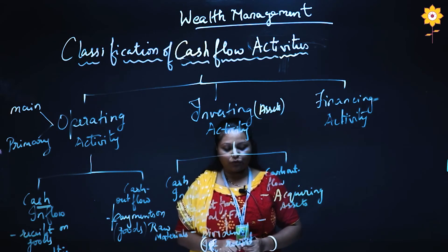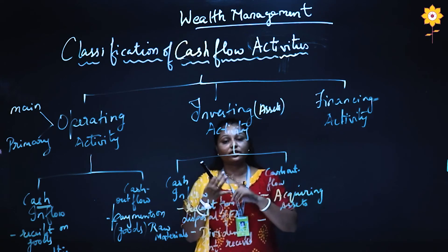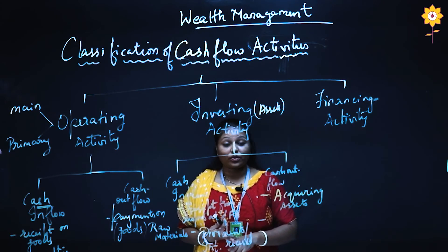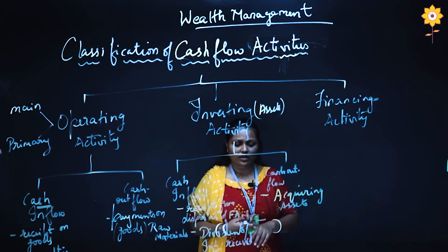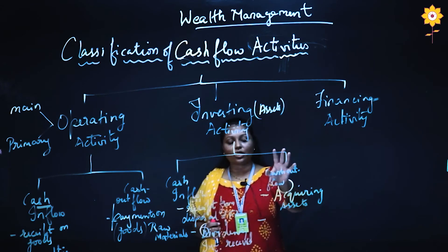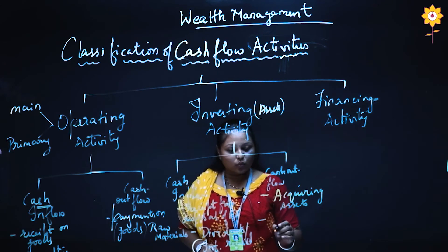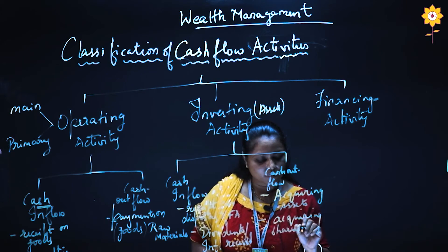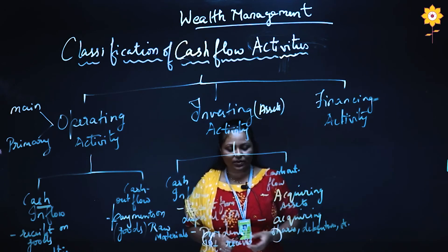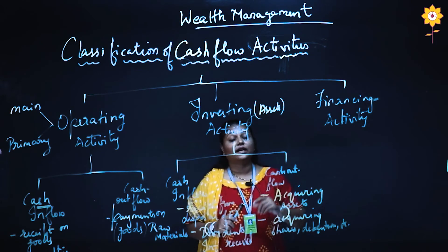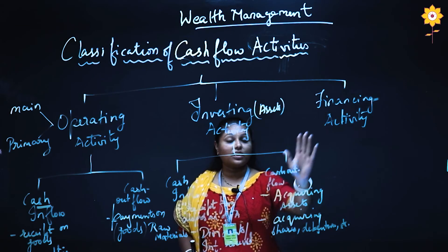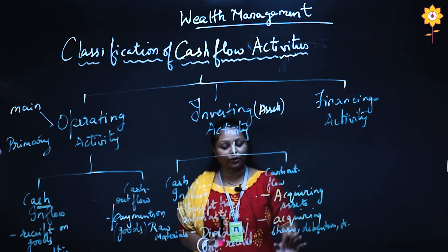Apart from this, if we are doing certain payments to acquire shares of another company, to purchase certain warrants, government securities, or debenture instruments, all the investment activities which we are doing on the basis of cash are going to come under this particular category. If we are acquiring shares, debentures, etc., then sometimes if we are making a cash advance payment to a third party — but we need to keep in mind that those advance payments are not coming under financial activities, those are different.